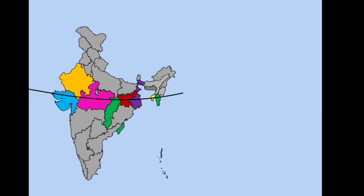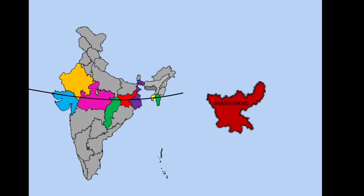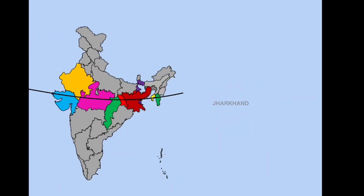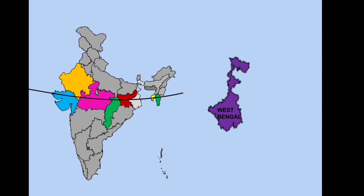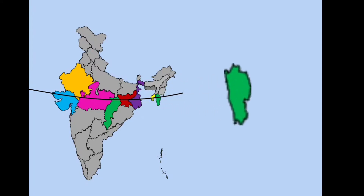The next state is Chhattisgarh, then Jharkhand, then West Bengal, then Tripura. Udaipur in Tripura is the city nearest to the Tropic of Cancer. And the eighth state is Mizoram.